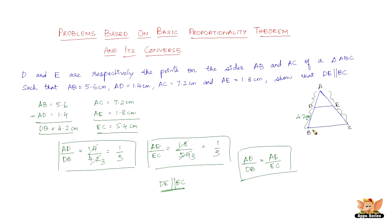Since AD by DB equals AE by EC, by the converse of the basic proportionality theorem, DE is indeed parallel to BC. Hence we have shown that DE is parallel to BC. The problem was pretty simple — we just needed to apply the converse of the basic proportionality theorem. Let's quickly solve another problem based on this concept.